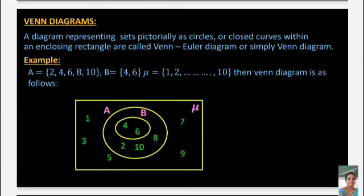Another Venn diagram example: if A = {2, 4, 6, 8, 10}, B = {4, 6}, and μ = {1, 2, ..., 10}. Since B ⊆ A, we draw circle A inside the rectangle, and circle B inside circle A. The elements 4, 6 are in B, while 2, 8, 10 are in A but outside B, and elements 1, 3, 5, 7, 9 are outside A.